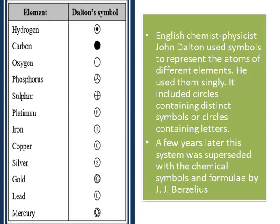Dalton's system included circles — for example, a plain circle for oxygen — containing distinct symbols, for example a circle with a positive sign for sulfur, or circles containing letters, like a circle with the letter S for silver. A few years later, this system was superseded by chemical symbols formally given by J.J. Berzelius, who came up with three conventions to write chemical symbols.